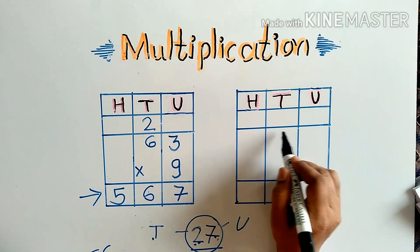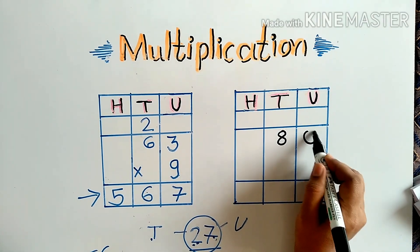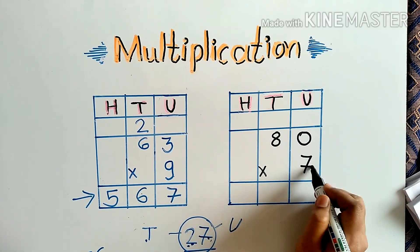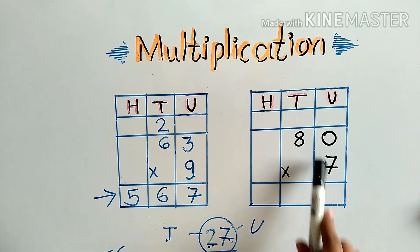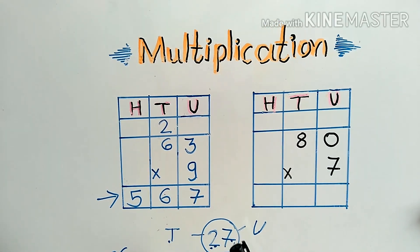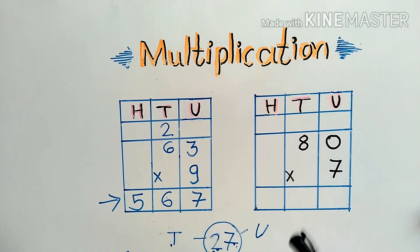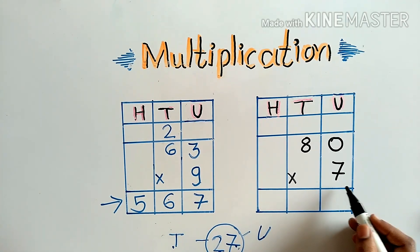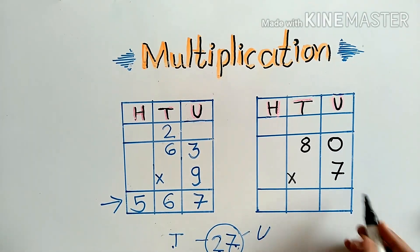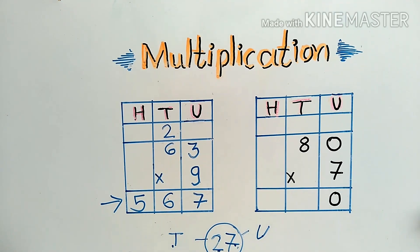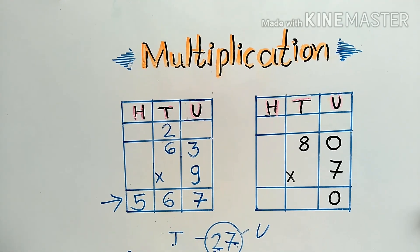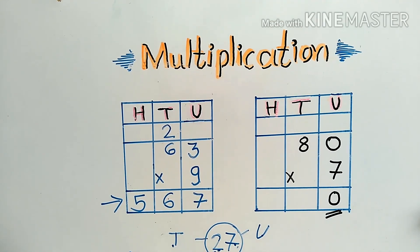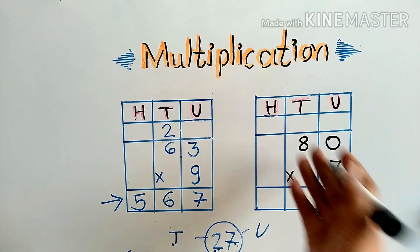The next example is 80 multiplied by 7. Here 80 is the multiplicand and 7 is the multiplier. We will start multiplying 7 by the units digit. 7 zeros are 0. Always remember, when we multiply any number by 0 the answer is always 0, so there is no carry over.